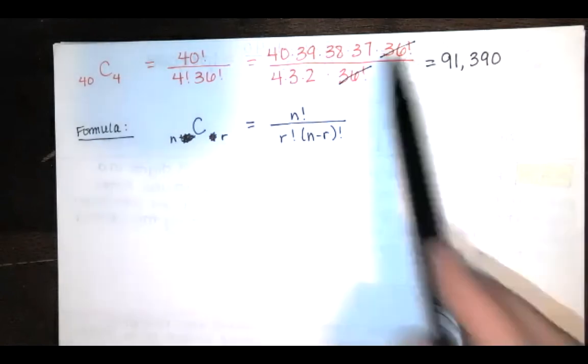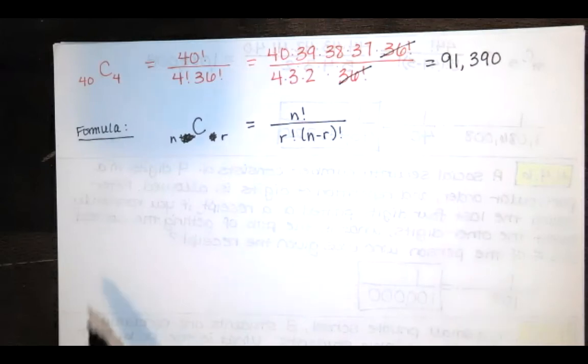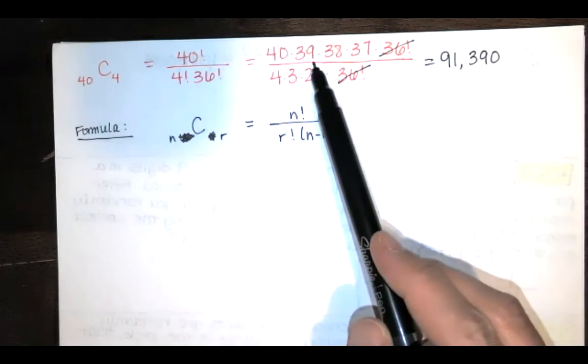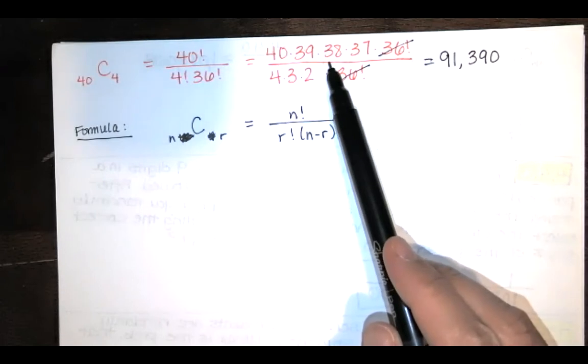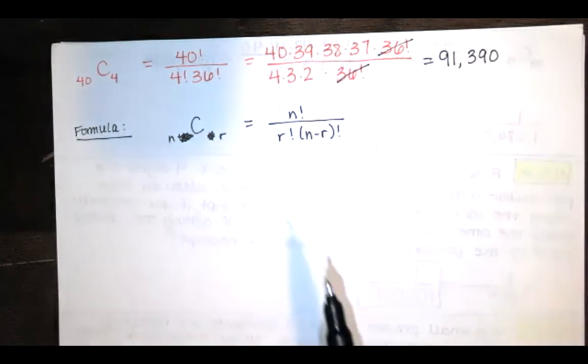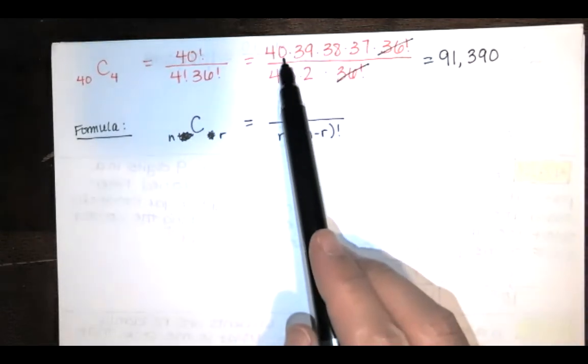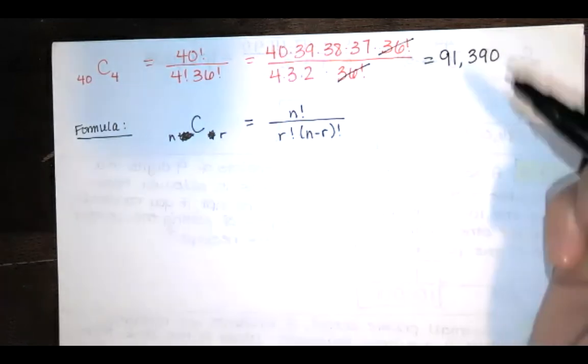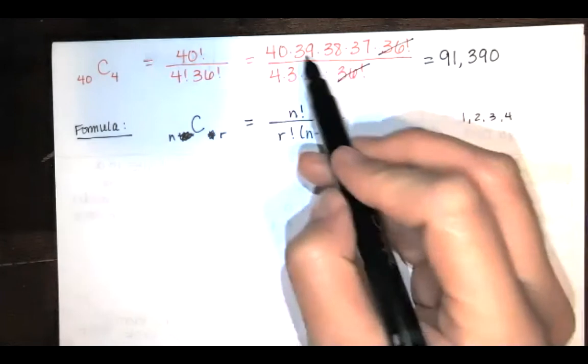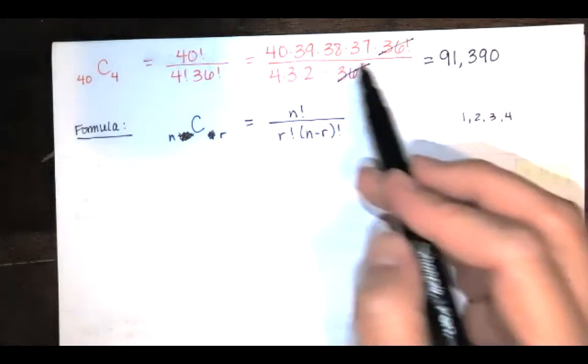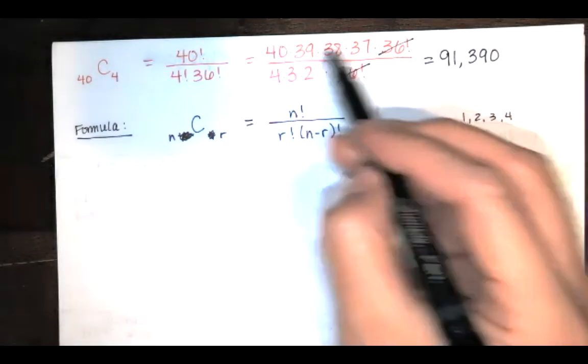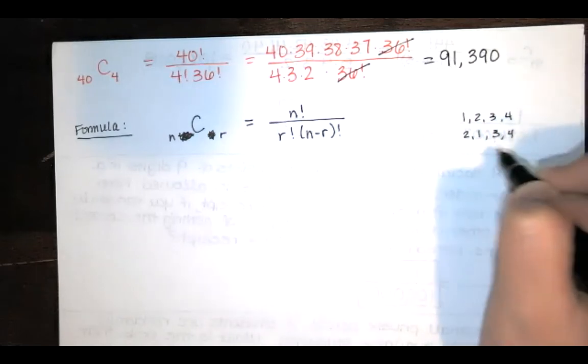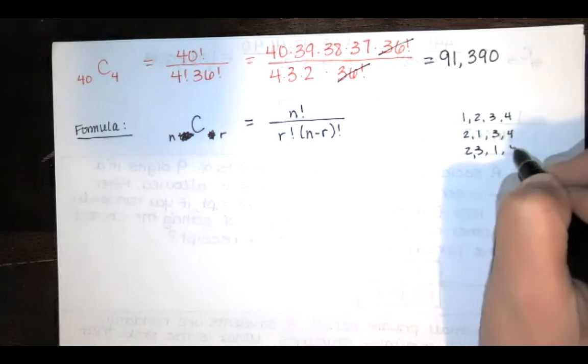The intuitive approach gives you exactly the same answer. If you have 40 numbers and you're selecting four of them, you've got 40 options for the first number, 39 options for the second number, 38 options for the third, and 37 options for the fourth. But the problem with that is that the order matters. If I multiply all of those together, let's say the numbers are 1, 2, 3, and 4. It turns out that this is counting 1, 2, 3, and 4 as different from 2, 1, 3, and 4, and as different from 2, 3, 1, and 4, and so on.